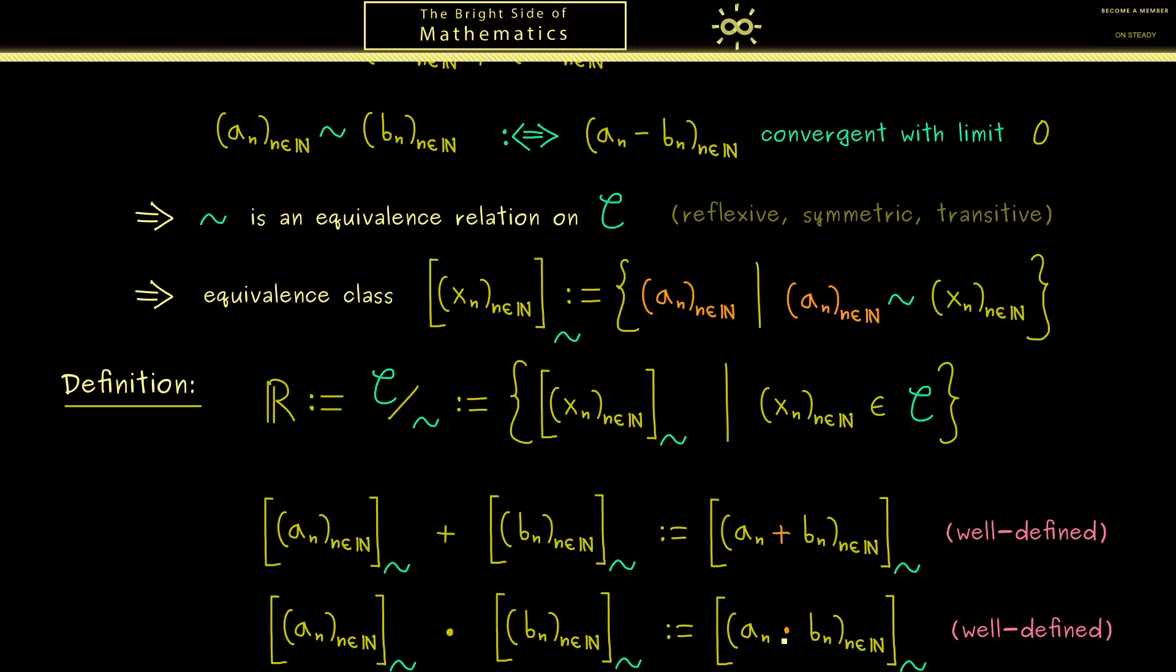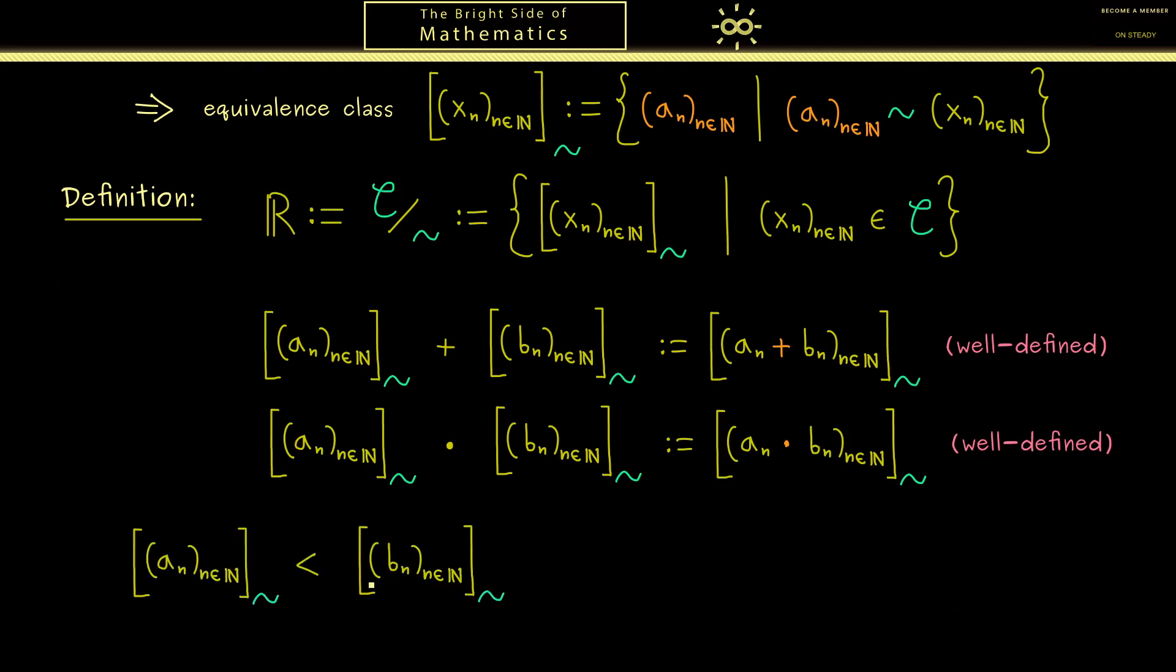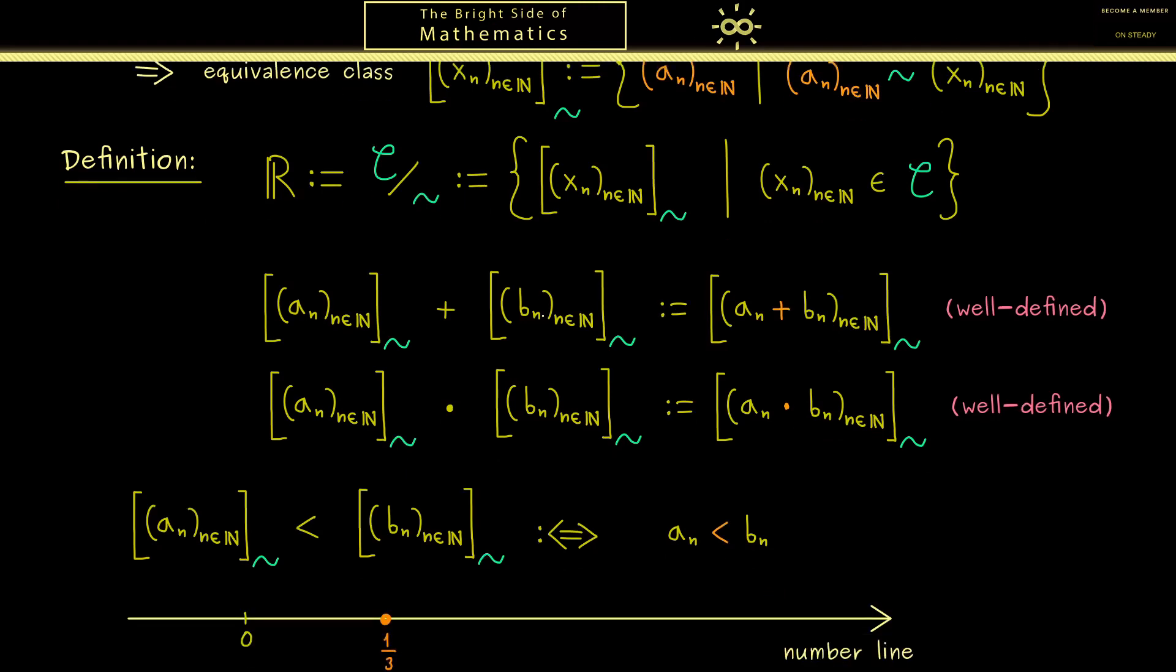Now looking back at the axioms we want to fulfill, you see that the last thing we need to define is an ordering. So we want to define in which cases one equivalence class is greater than another one. Of course, here we need to use the ordering we have for the rational numbers again. However, claiming this for all sequence members is much too restrictive for us. To see this, please keep the number line in mind.